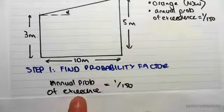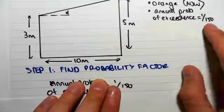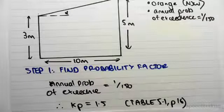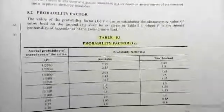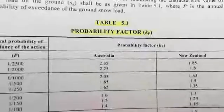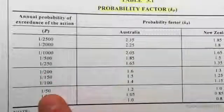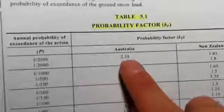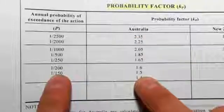We have an annual probability of exceedance of one in 150, as denoted by the question. We then flip over to Table 5.1, page 16. Let me zoom in. So annual probability of exceedance, we were given one in 150.